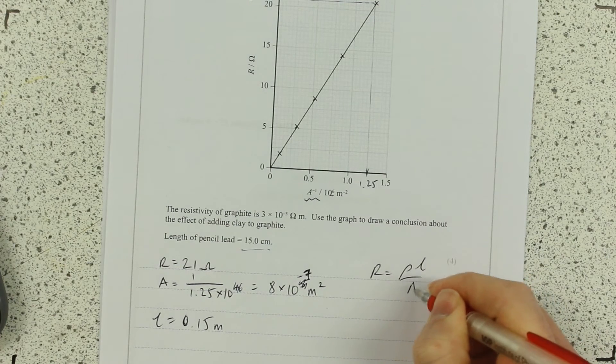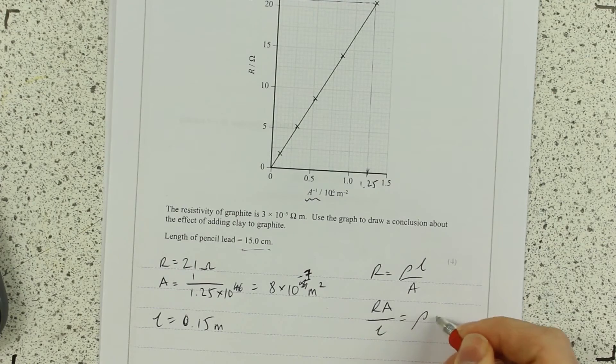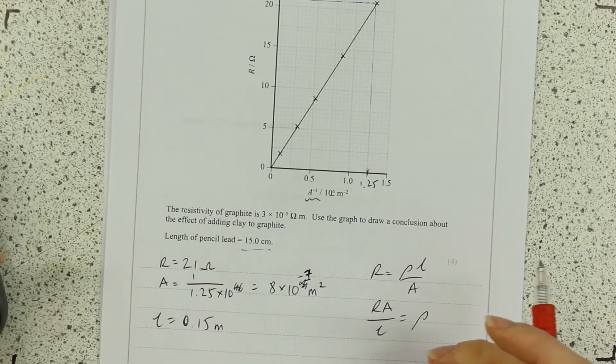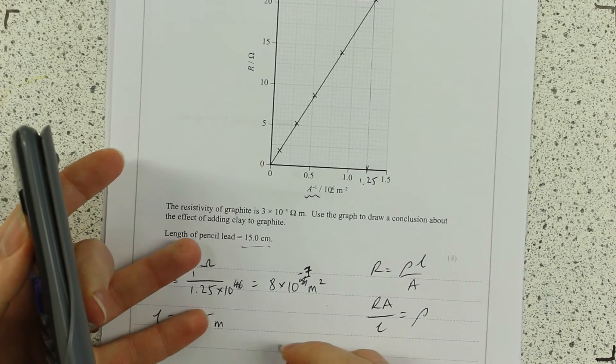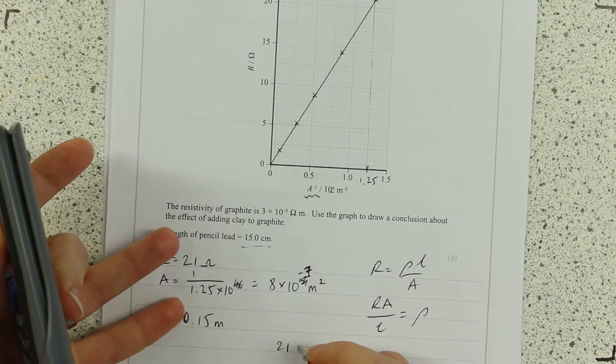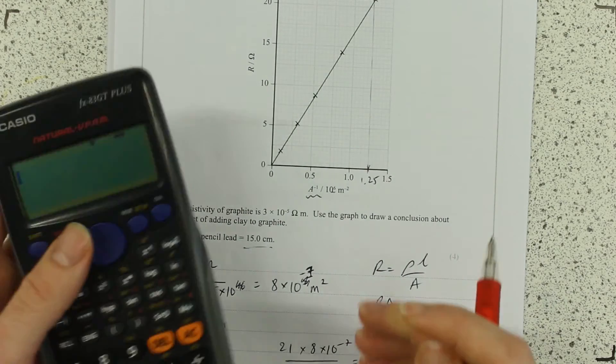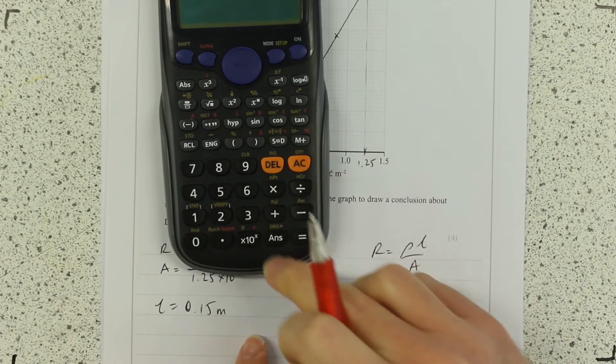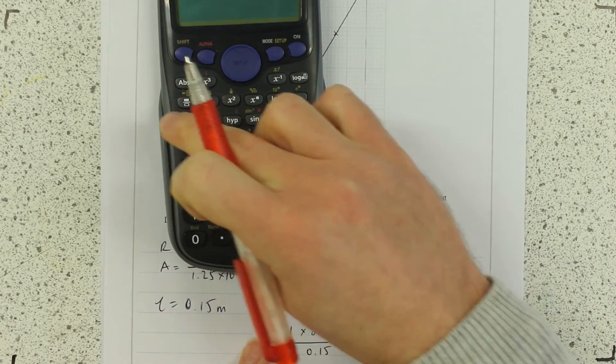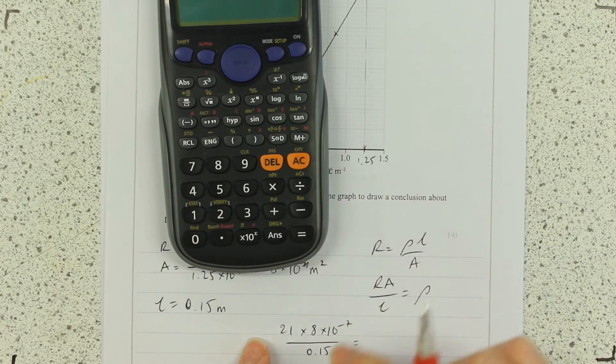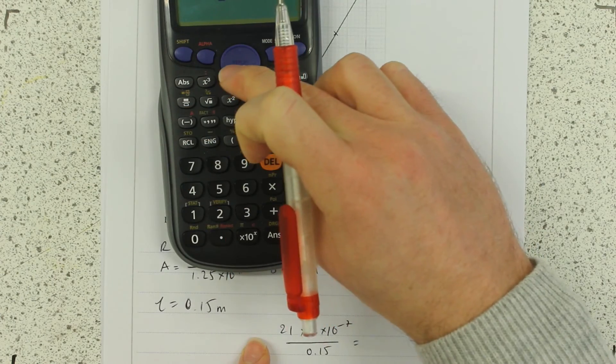I remember my resistance is this equation. To rearrange for resistivity is RA over L equals rho. So just sum that round. 21 times 8 times 10 to the minus 7 over 0.15 equals. And I'll write that down because, do you know what? If I make a mistake, the examiner can give me a little bit of credit. Potentially give me a mark for that working out. And I'd like that.